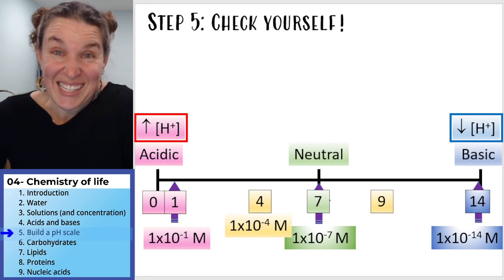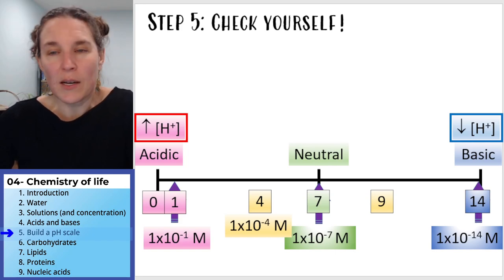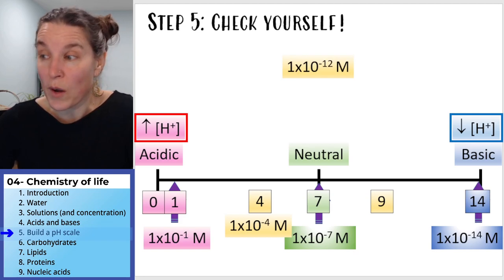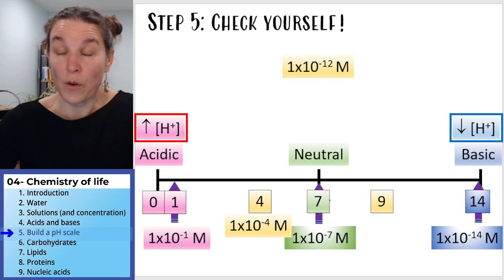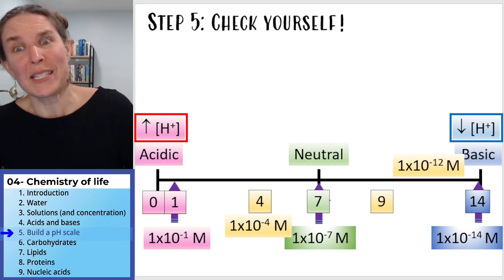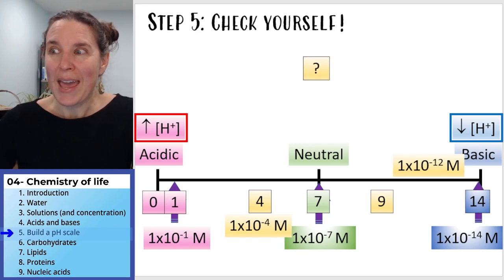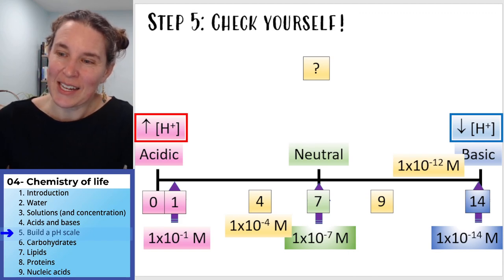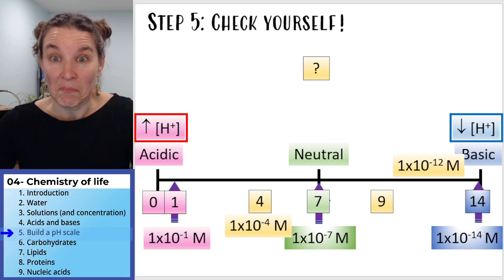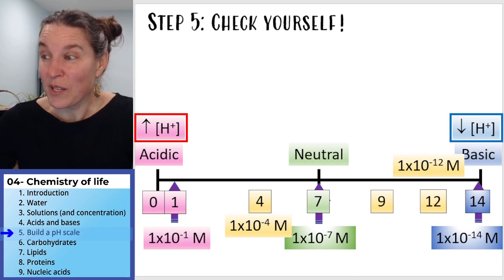It's easy once you've got this pattern. What about 1×10⁻¹²? We don't have a box already in place for that, but it's got to be somewhere on the basic side. And what's the pH of 1×10⁻¹²? It's 12.